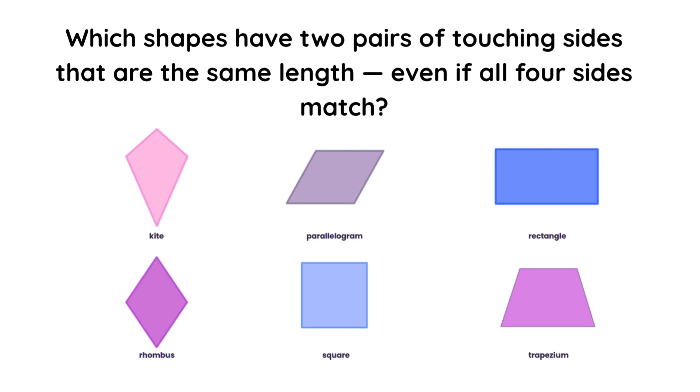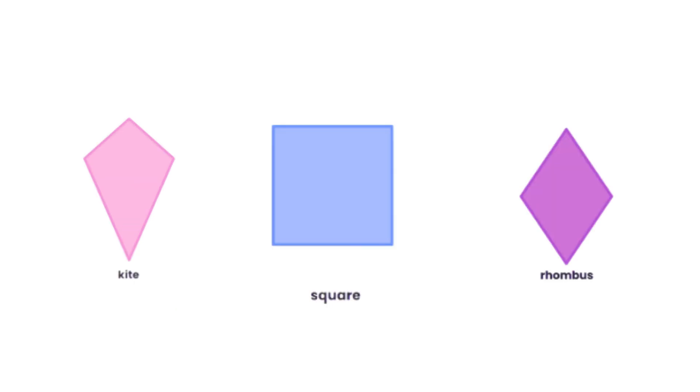Which shapes have two pairs of touching sides that are the same length, even if all four sides match? The answer is kite, square, and rhombus.